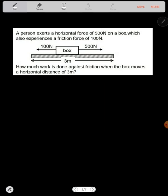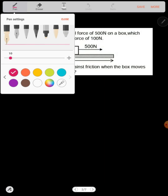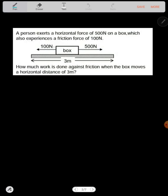This question is talking about work done and energy. A person exerts a horizontal force of 500 newtons on a box which also experiences a friction force of 100 newtons. So you can tell there's a friction of 100 newtons, there's also a forward force which is pulling this box the other side which is 500 newtons. How much work is done against friction when the box moves a horizontal distance of three meters?